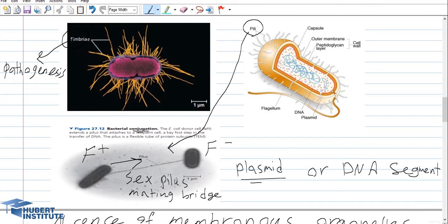Besides pili, there are other structures called fimbriae on the outer surface of prokaryotic cells. They play an important role in the pathogenesis of prokaryotic cells and are thinner and longer compared to pili.